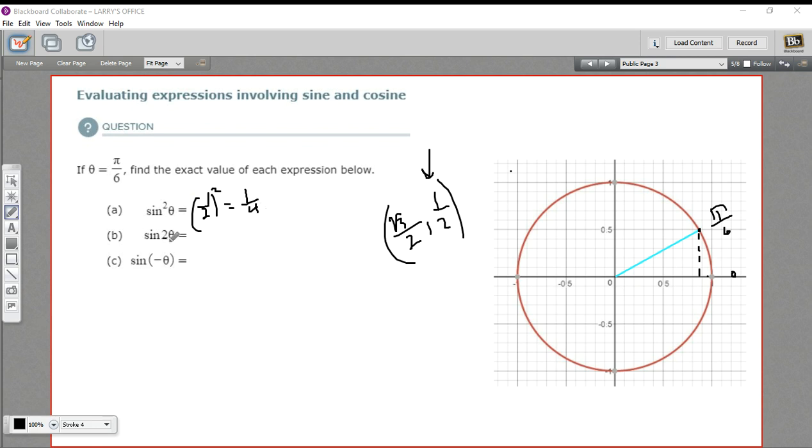The next one is the sine of 2 theta. What you want to do there is multiply your theta by 2. So that would be 2 pi over 6, which is pi over 3. And then find the sine of that. Well, pi over 3 is a different angle. So let's plot that one. So there's our pi over 3. And the coordinates here, you can probably see that the y coordinate is the longer one.